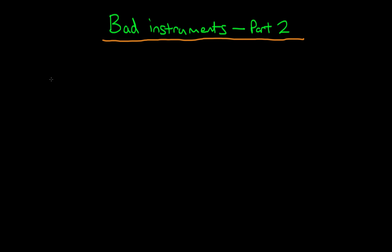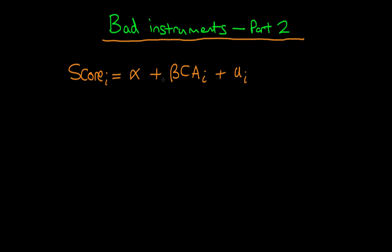In this video I want to provide another example of a bad instrumental variable. The example we're talking about is finding out whether classroom attendance has an effect on an individual's test score for that particular class. Theoretically, we might expect a positive relationship between classroom attendance and score, because if you attend class you get exposed to more of the source material, meaning you're likely to do better. So we expect that beta in the population is greater than zero.